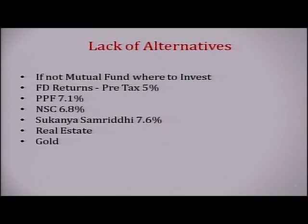Alternatives की बात करते हैं: आप FD में invest कर सकते हैं — FD में आपको 5% का return मिलता है, tax कटेगा, effective return कम हो जाएगा. PPF में effective rate of return is around 7.1%. NSE में 6.8% के आसपास. Sukanya Samridhi 7.6% के आसपास. Real estate में long term में बड़ा return नहीं आया है — कहीं कहीं patches में आ जाता है, पर पिछले कुछ सालों में blanket return नहीं है.